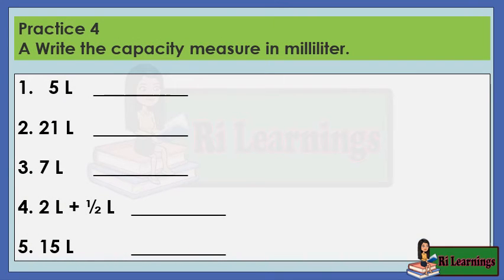Practice 4A — Write the capacity measure in milliliters. 1. 5 liters. 2. 21 liters. 3. 7 liters. 4. 2 liters.